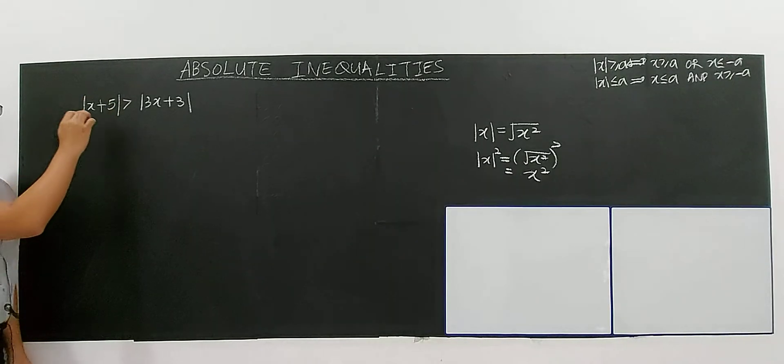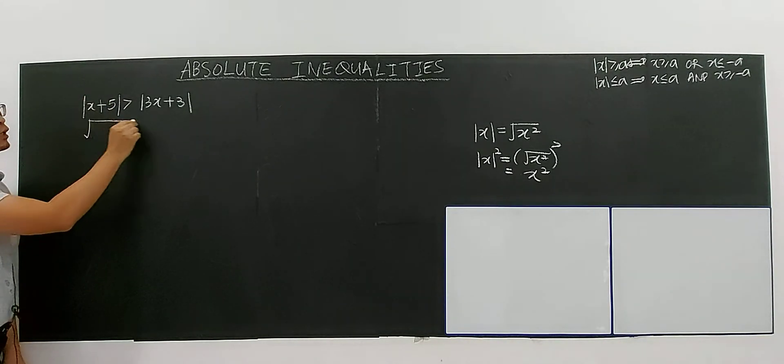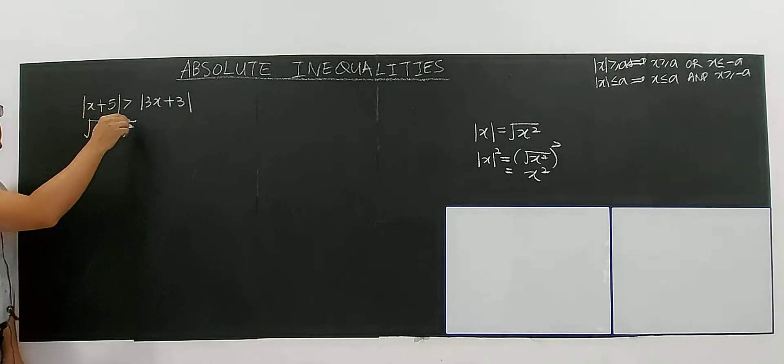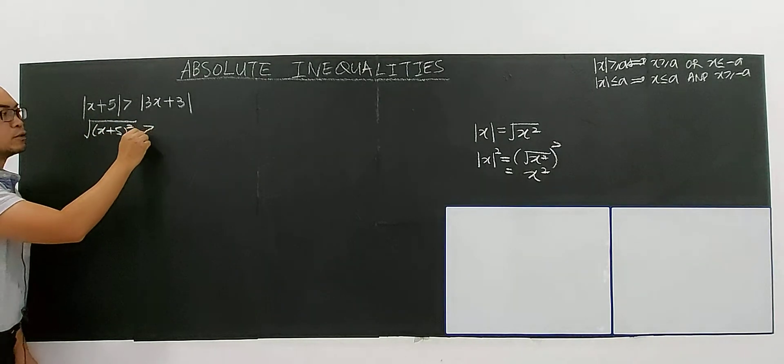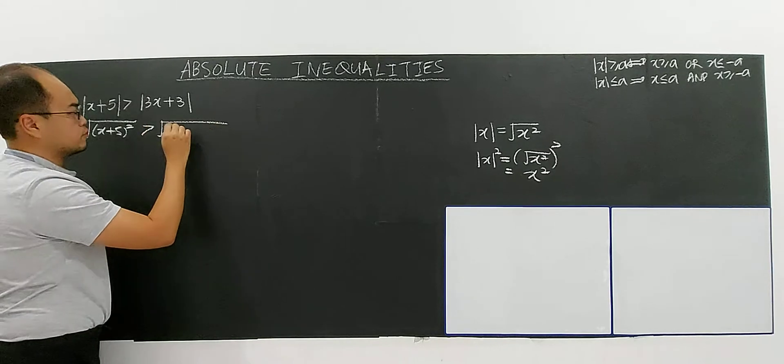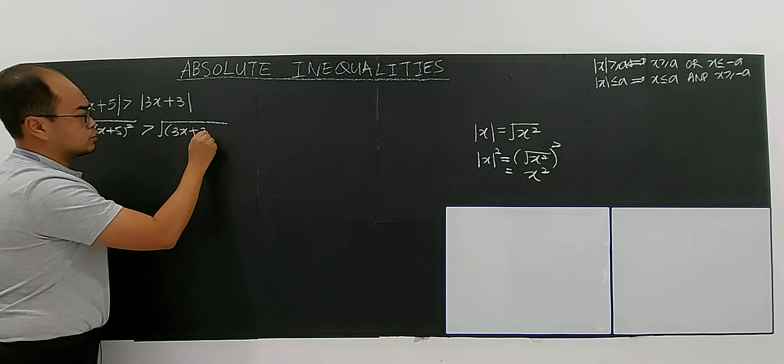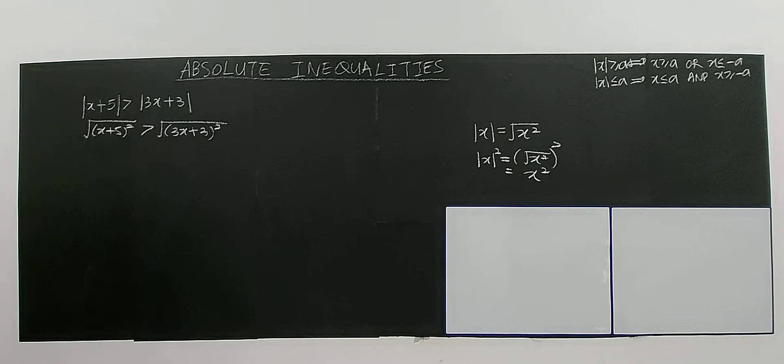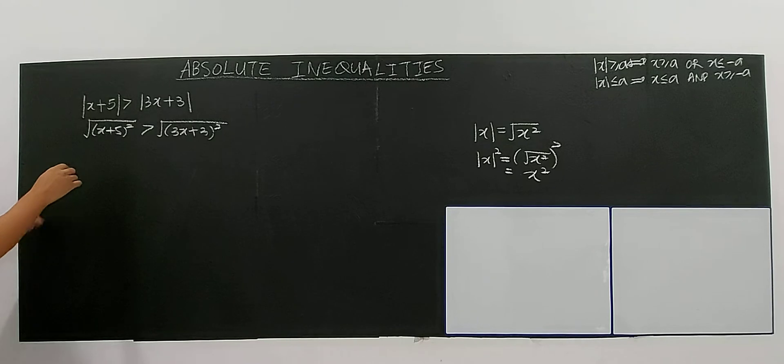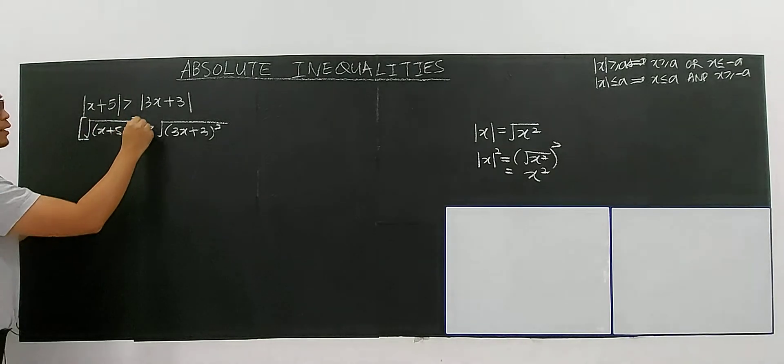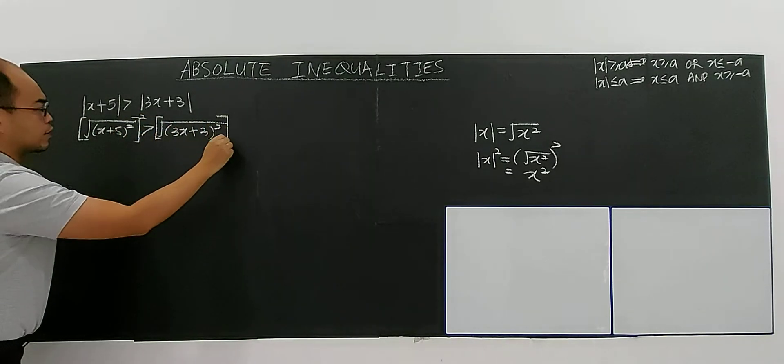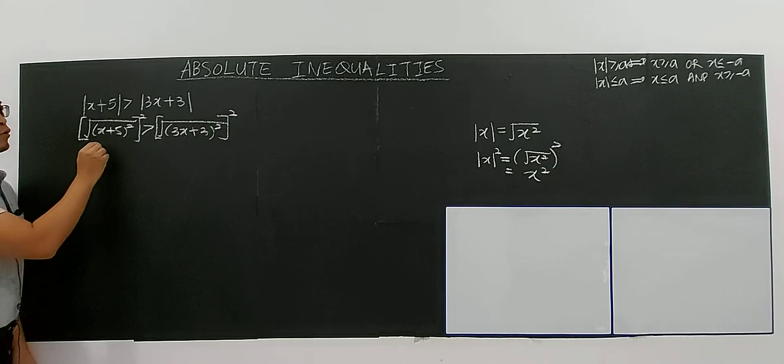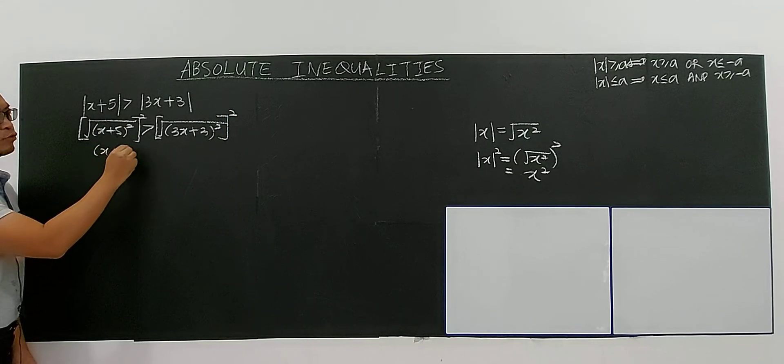For the first video about this example, I will detail a bit about actually the x plus 5 square. I can rewrite this modulus. Another writing of modulus is square root of x plus 5 square, greater than square root of 3x plus 3 to the power of 2. So if we want to get rid of the square root, I have to do squaring both sides. That's why we apply the method of squaring both sides.